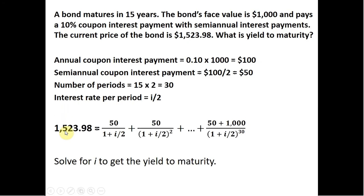And the math formula in terms of solving the yield to maturity is basically trying to solve this equation. The 1523.98 is the present value of these discounted payments that extend 30 periods. 50 represents the semi-annual coupon interest payment. So at the end of June, you'll get a $50 payment, for example.